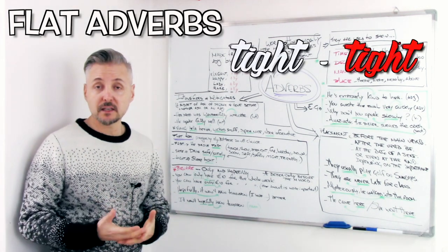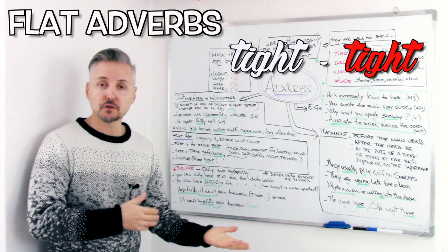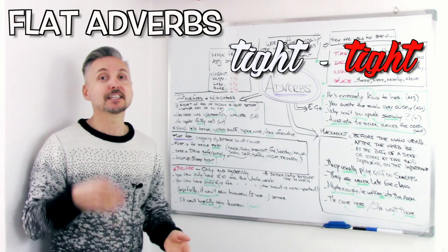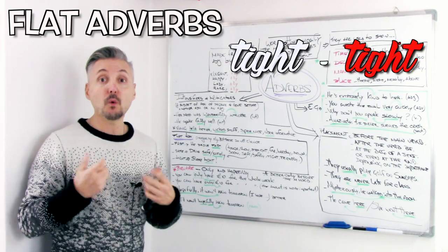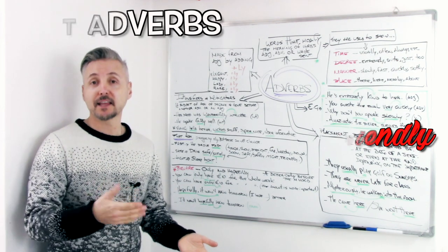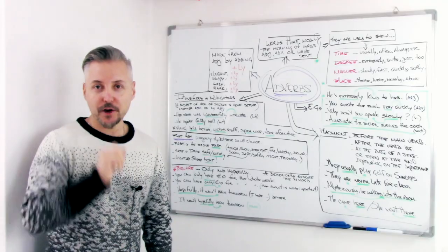Then, we have tight. For example, a father to a son says sleep tight. Not tightly. Sleep tight. Sleep well. This is what it means. And then, we have friendly. Friendly and the adverb friendly. Beware though. We have only and hopefully.